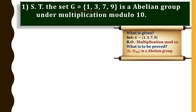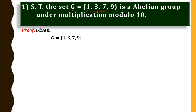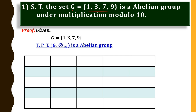Note that G is a finite set. To prove a finite set is an abelian group, we use the method of constructing the composition table. So let us prove that. Write the given set G = {1, 3, 7, 9} and our aim is to prove that G is an abelian group under multiplication modulo 10. Now let us construct the composition table.